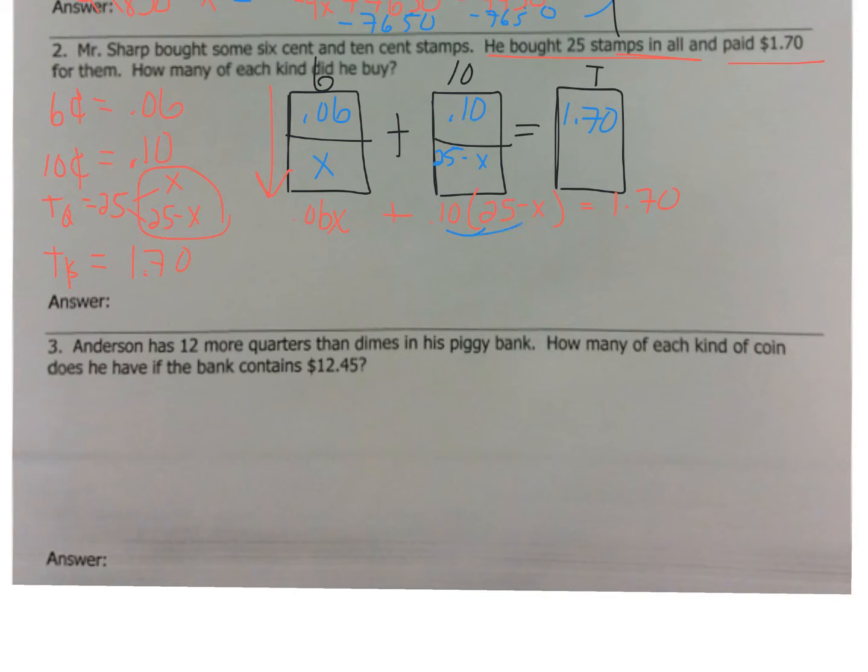Now, I'm going to distribute. So, 0.06X plus 2.5 minus 0.10X equals to 170. Now, here's where you have to be careful, folks. When I combine my like terms, 0.06 minus 0.10 is not 0.4. This says if you have 6 cents and you owe 10 cents, you still owe 4 cents. Now, again, if you're awful with decimals, I would recommend using your calculator for that, even that simple calculation, to make sure you don't mess up.